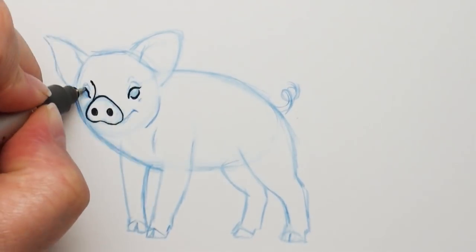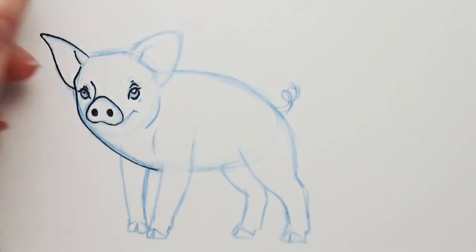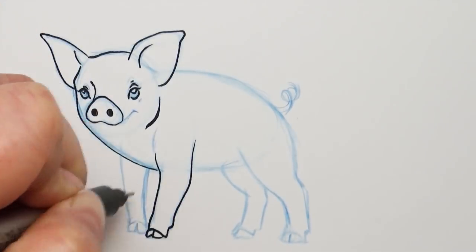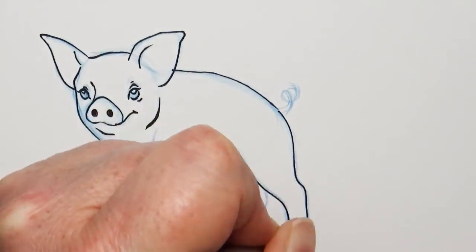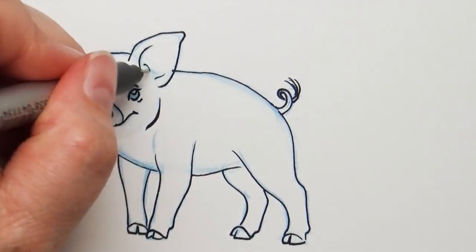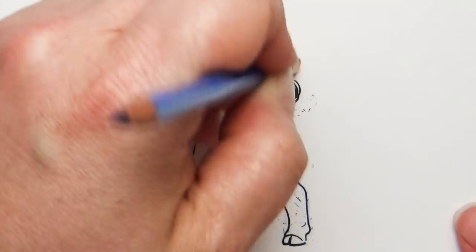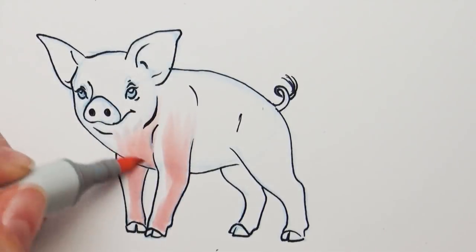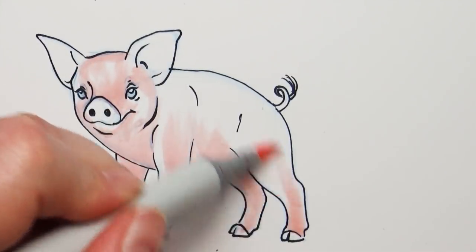I'm going to quickly ink this in. I definitely do not draw this fast. This is sped up here. So I'm going to go ahead and color this in. But I want to give you guys a couple of hints on getting better with your drawing. And I say this a lot, but I'm going to say it again in this video. And that's when you learn to draw something like we've learned to draw this cute little pig.